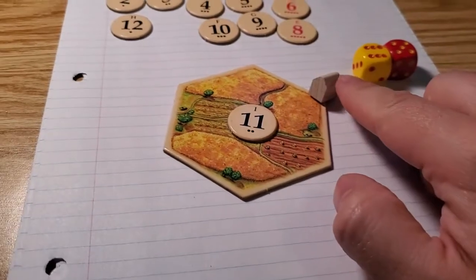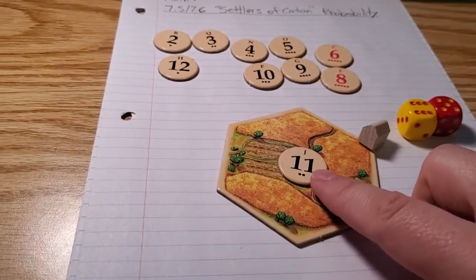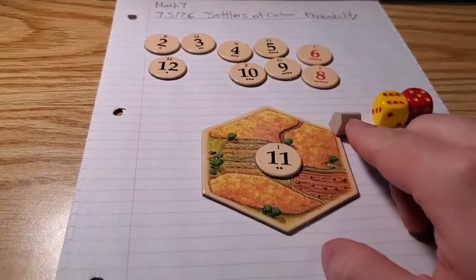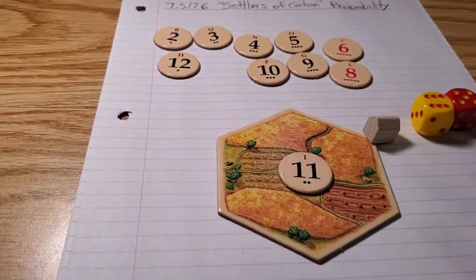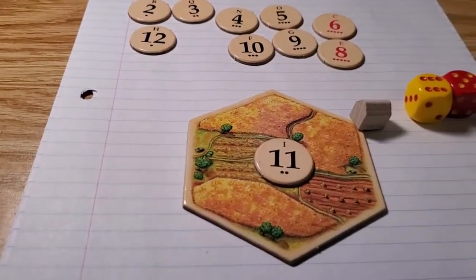So an 11 is rolled, then the person who is the white houses, or the white team, would get one of these resources. And with that, they can then buy things that can get them victory points, and by doing that, they are more likely to win the game.